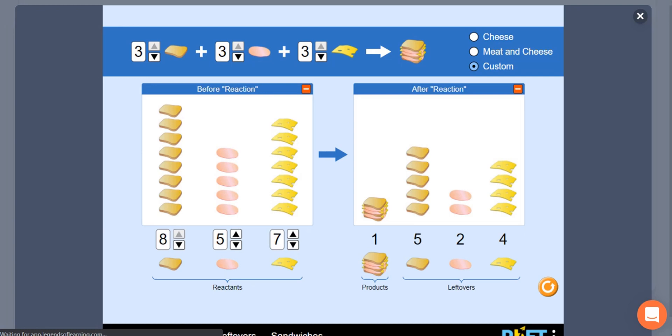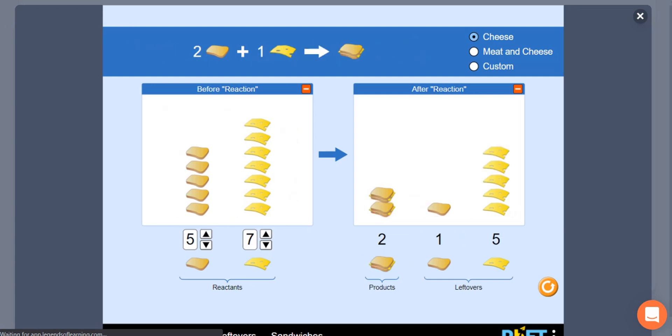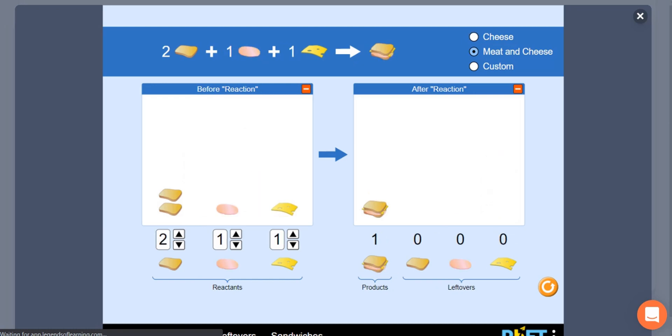Observe the before and after reaction and see what is left over. You can choose between three different categories of sandwiches: cheese only, meat and cheese, or custom.